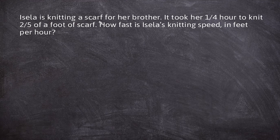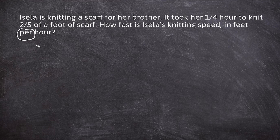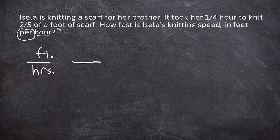Isayla is knitting a scarf for her brother. It took her one-quarter hour to knit two-fifths of a foot of scarf. How fast is Isayla's knitting speed in feet per hour? The word 'per' tells us we need a unit rate. The per unit is hours, so hours goes on the bottom as the denominator and feet goes on top. One-fourth goes on the bottom to represent hours, and two-fifths goes on top to represent feet.